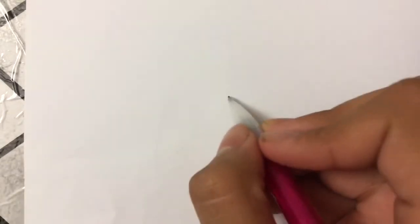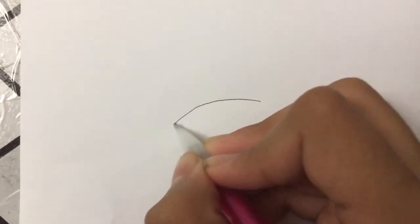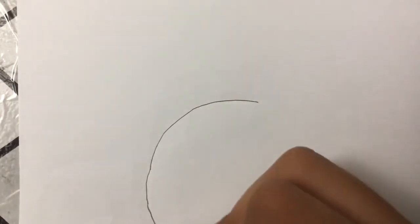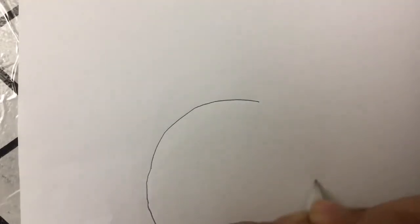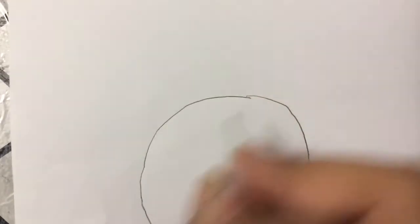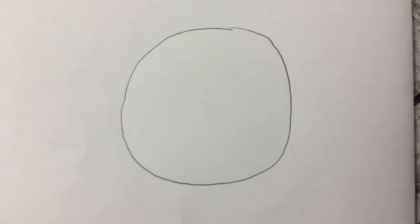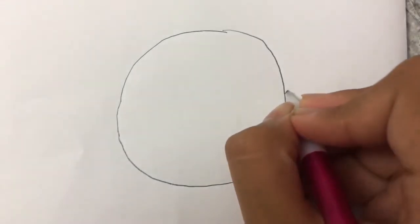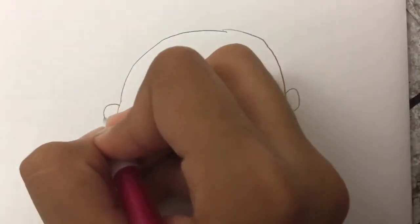Hey guys, today we're gonna be drawing a cute and easy Voldemort. So let's get started. First we're just gonna draw a circle like this, and then I'm gonna draw an ear from here and then another one from here.